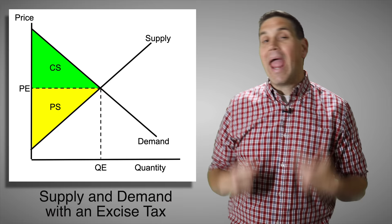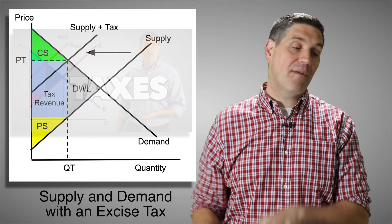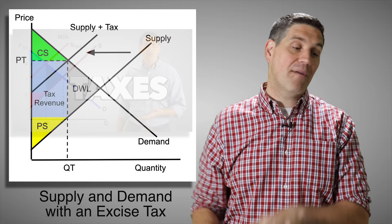You see that same concept when you put an excise tax on a market. Supply shifts to the left, consumer surplus is here, producer surplus is here, and we have deadweight loss. This box right here is the tax revenue that goes to the government. I know I'm covering this super quick, but I have free videos on YouTube that cover all the details.